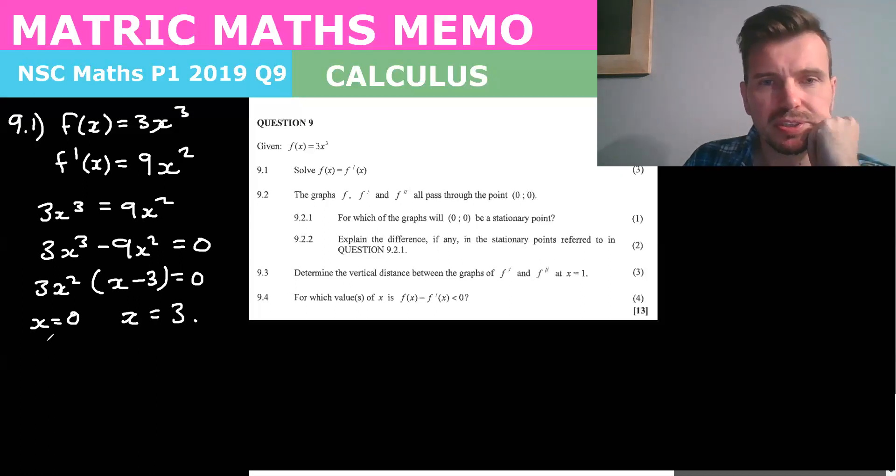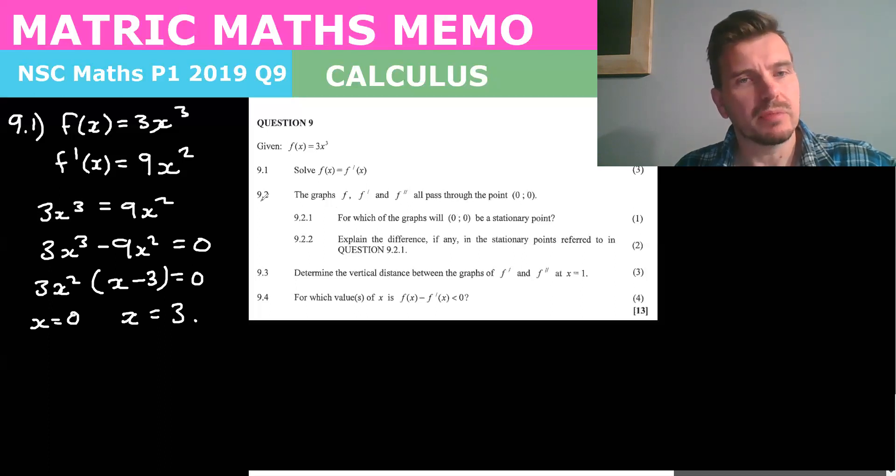Question 9.2 says for which graphs will 0,0 be a stationary point. Well we know that if you substitute in 0 for x for f of x you get y. So 0,0 is a point on f of x. 0,0 is also a point on f dash of x because if you put in 0 here for 9x squared you'll get 0 as well.